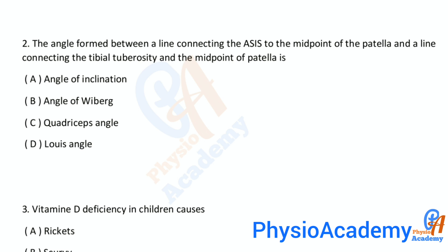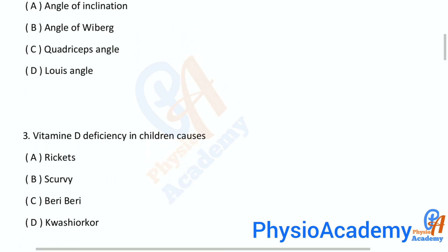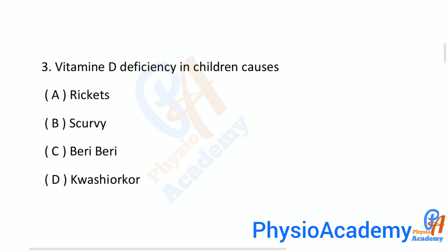The correct answer is option C: quadriceps angle. Third MCQ: Vitamin D deficiency in children causes: A) rickets, B) scurvy, C) beriberi, D) Kwashiorkor. The correct answer is option A: rickets.